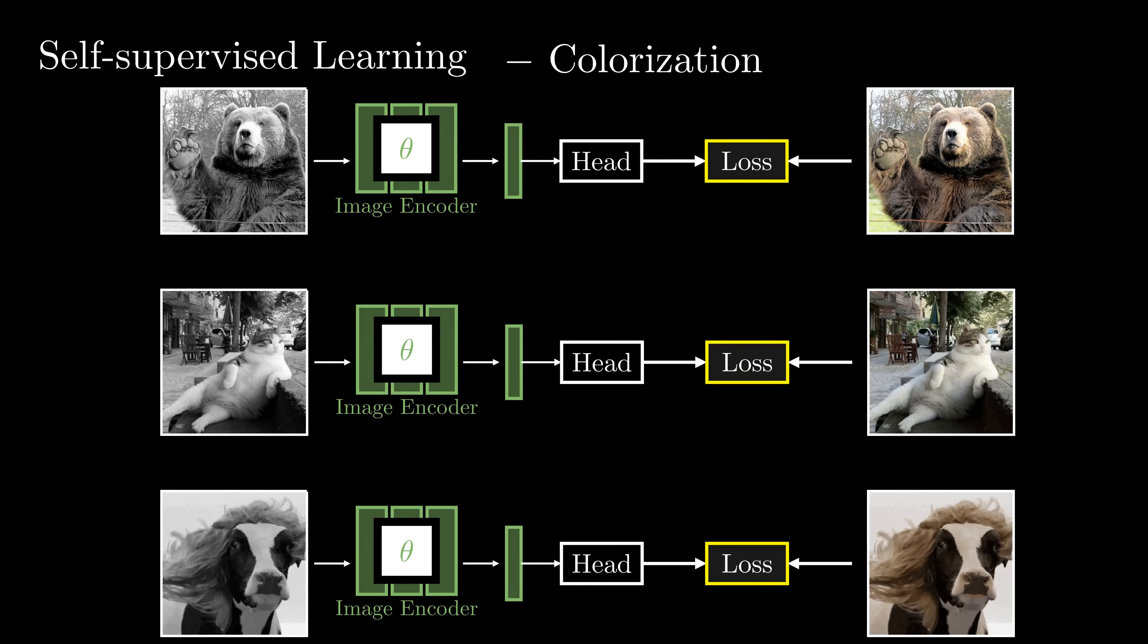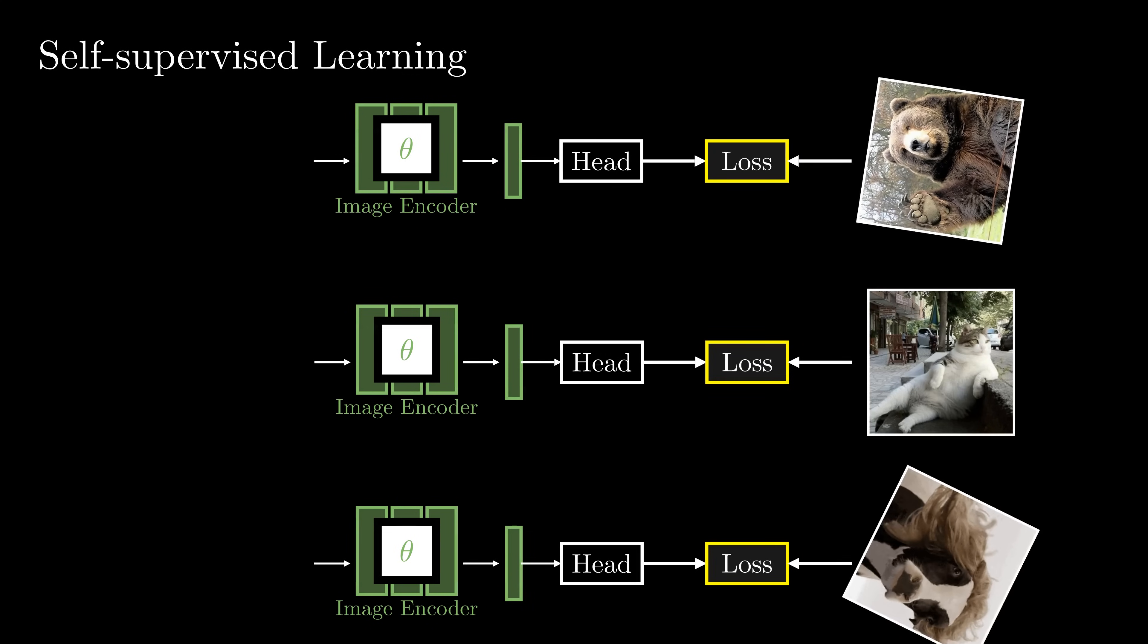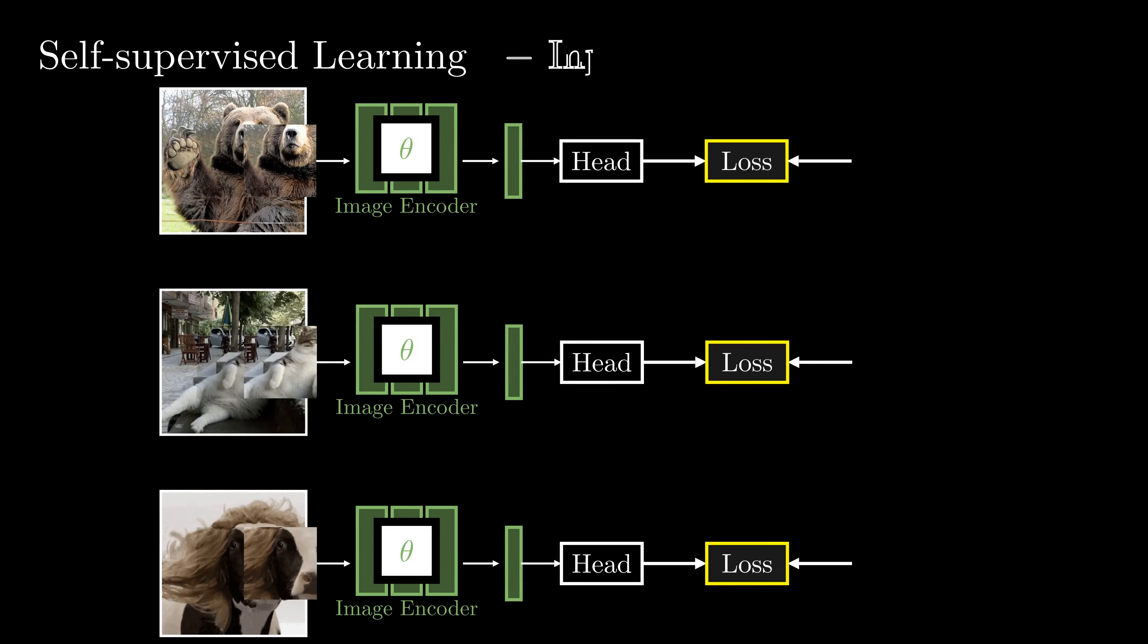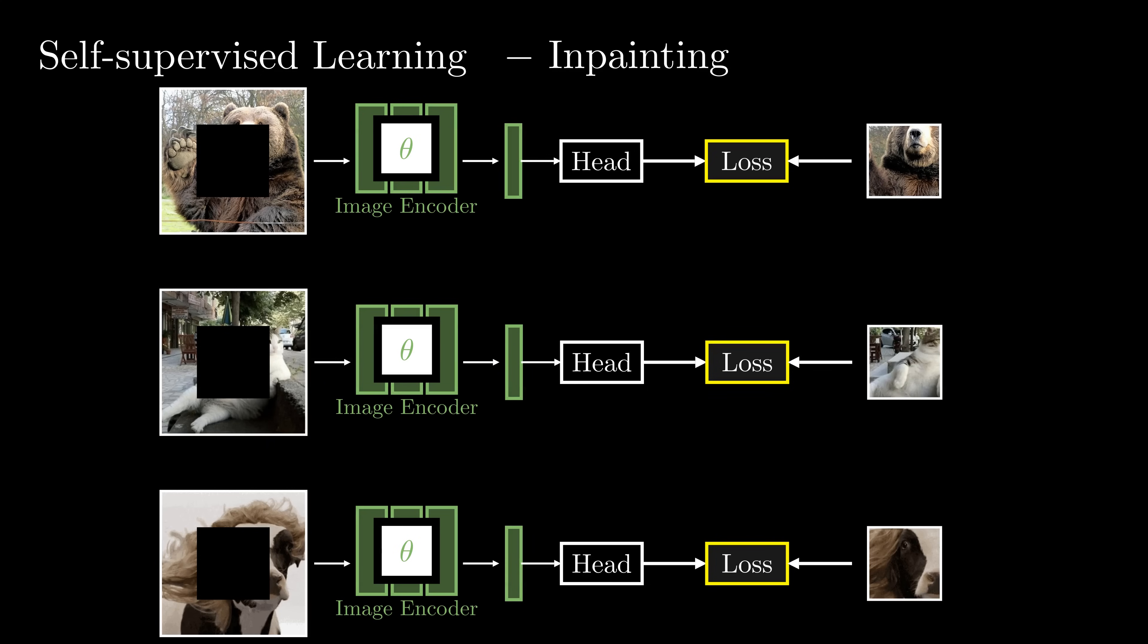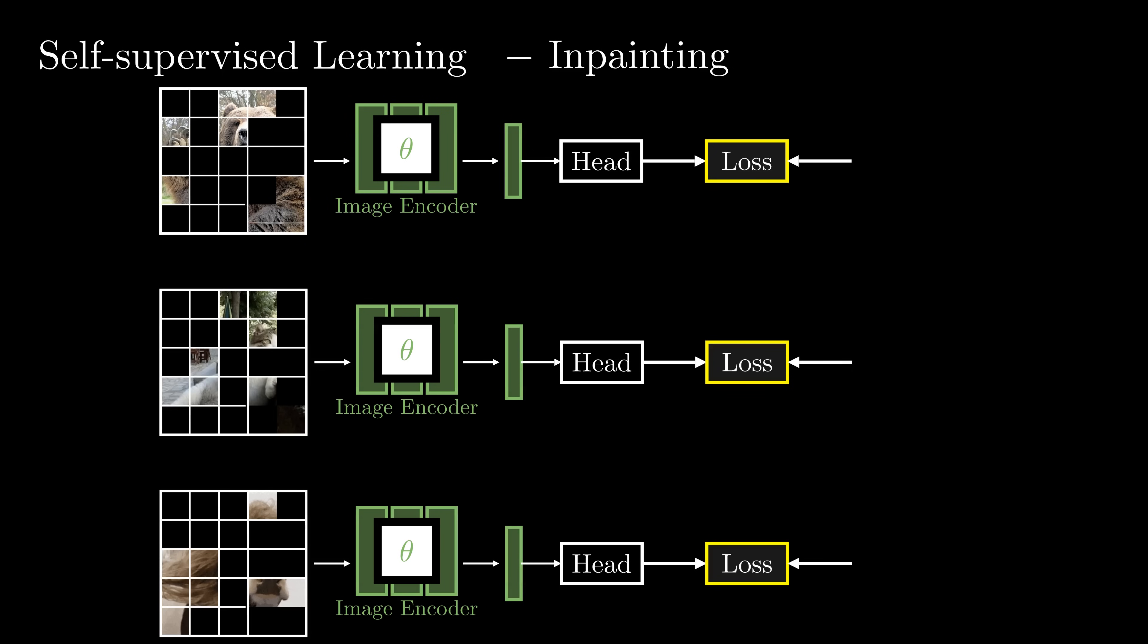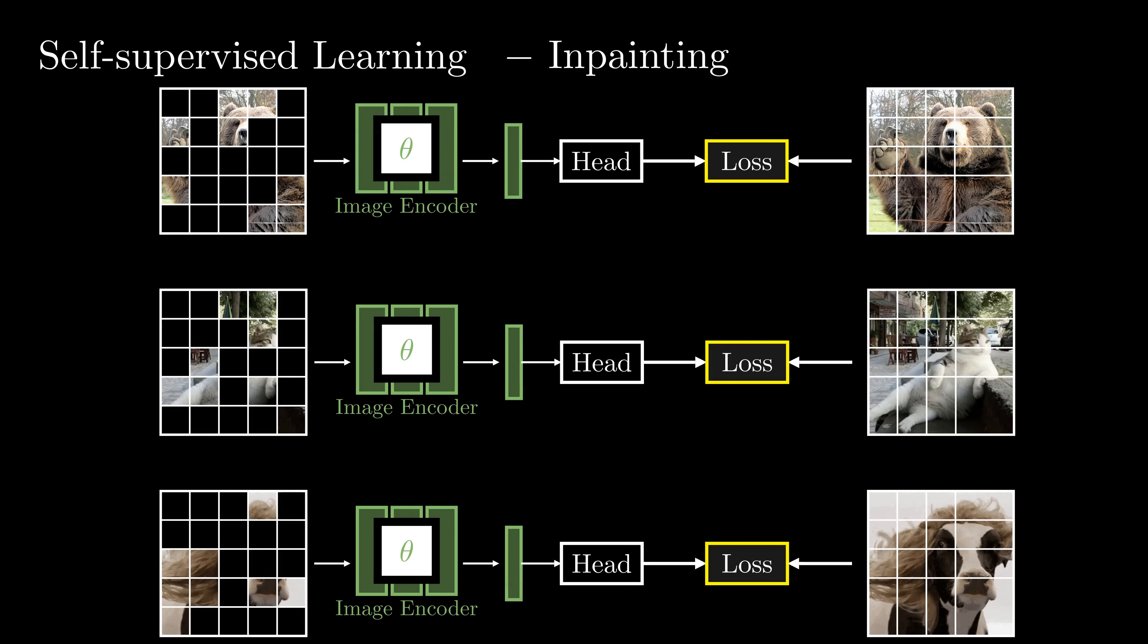For example, we can train the model to colorize an image, predict the rotation angle of an image, impaint the center patch from the surrounding context, or more generally, predict missing local patches from randomly masked input images. However, training on these manually designed tasks does not enforce learning representations that are semantically rich or transferable.